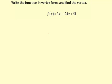Write the function in vertex form and find the vertex. We have f of x equals 3x squared plus 24x plus 51.